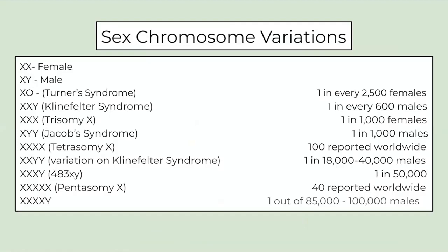Looking at these statistics, it's pretty interesting. Things like one in every 600 males or one in every 1,000 — I have a super rare neurological condition that's about 1 in 2 million, so 1 in 1,000 seems very common by comparison.